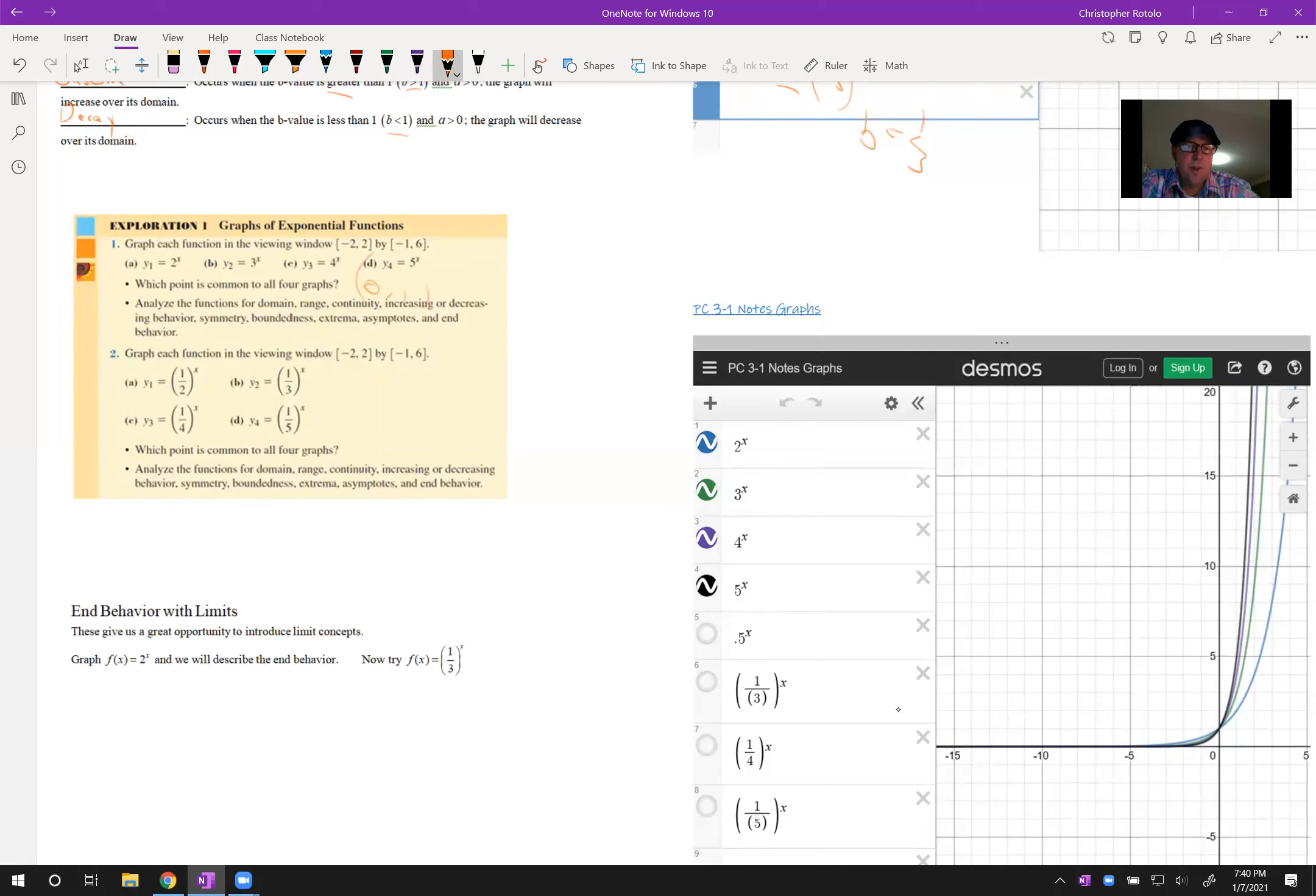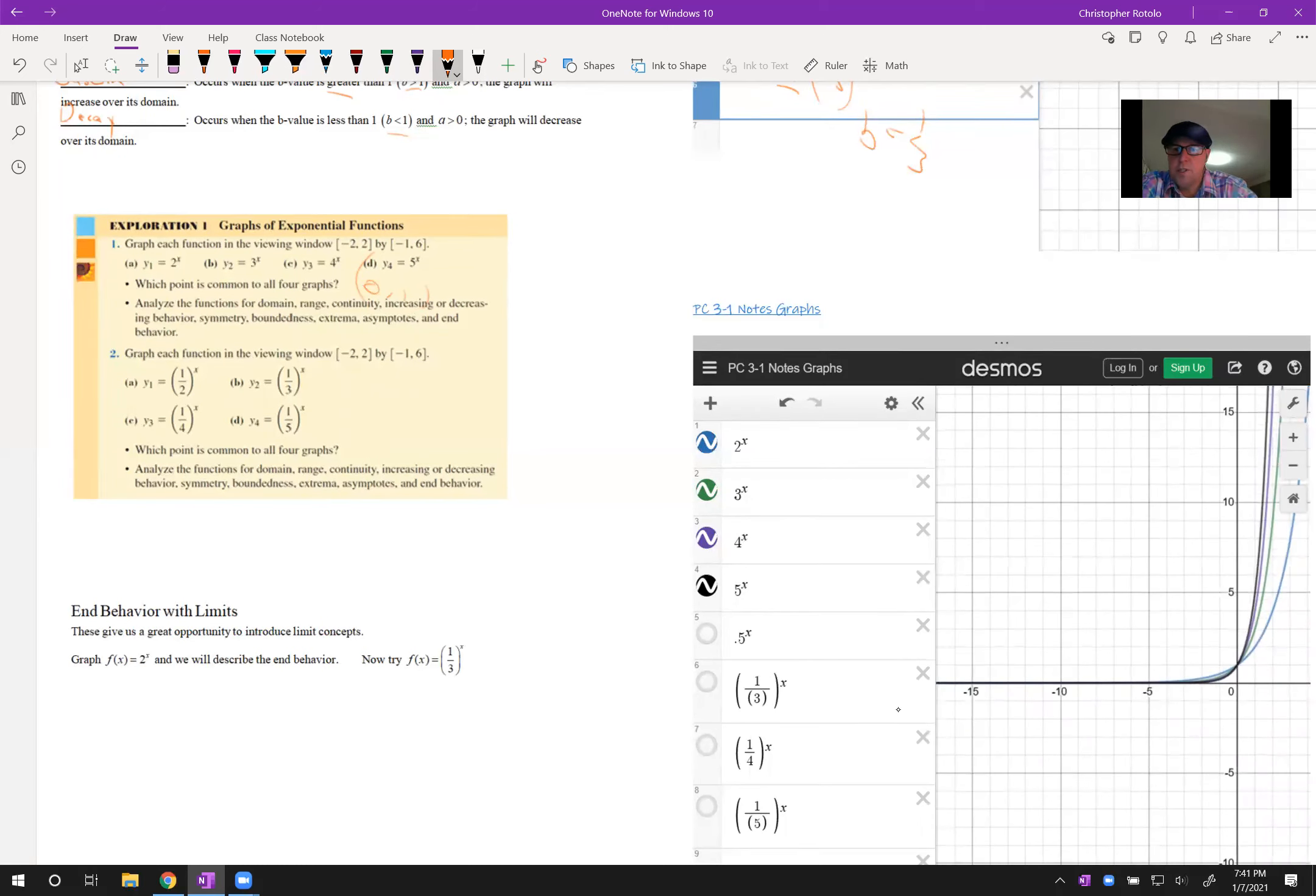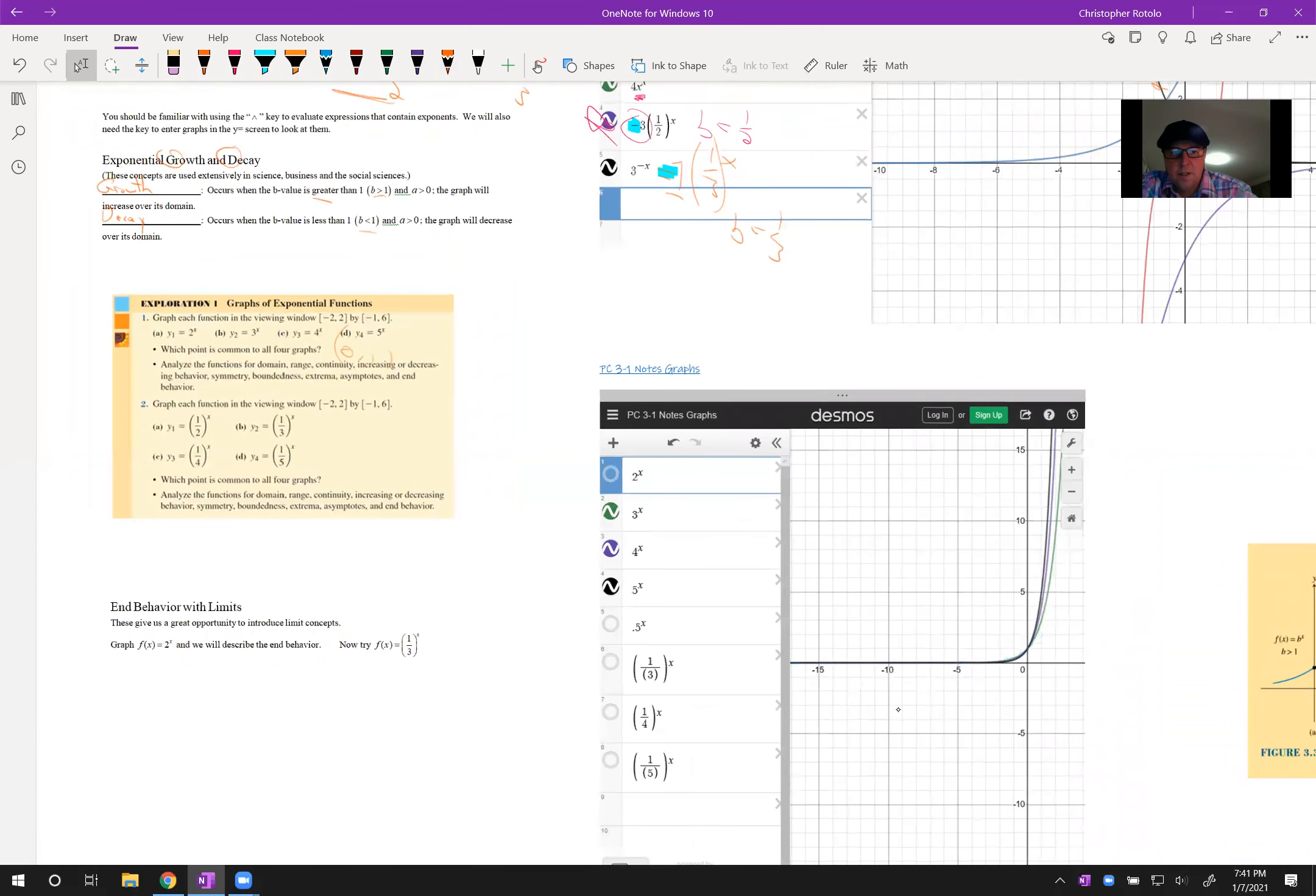So we could do is, which point is in common for all of them? Well, that's (0,1). And analyze the functions for domain, range, are they continuous, increasing, decreasing behavior. All the things we've talked about this year, we could take a look at and list all that information. So we know domain left to right forever is all reals. The range, since these are going to be above, they are (0, infinity), because they just keep rising. Their growth, that's what they do.